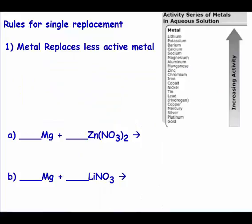The first rule is metals replace less active metals. So we look at our element that's by itself — magnesium. Magnesium has a positive charge, positive 2 to be exact. It wants to be part of that compound, so it's going to try to replace the other positive one, which is a metal. Magnesium is trying to kick out zinc. So we have to look at the activity series — this will be provided on a test. We find magnesium and zinc; magnesium is above zinc, therefore magnesium can kick out zinc.